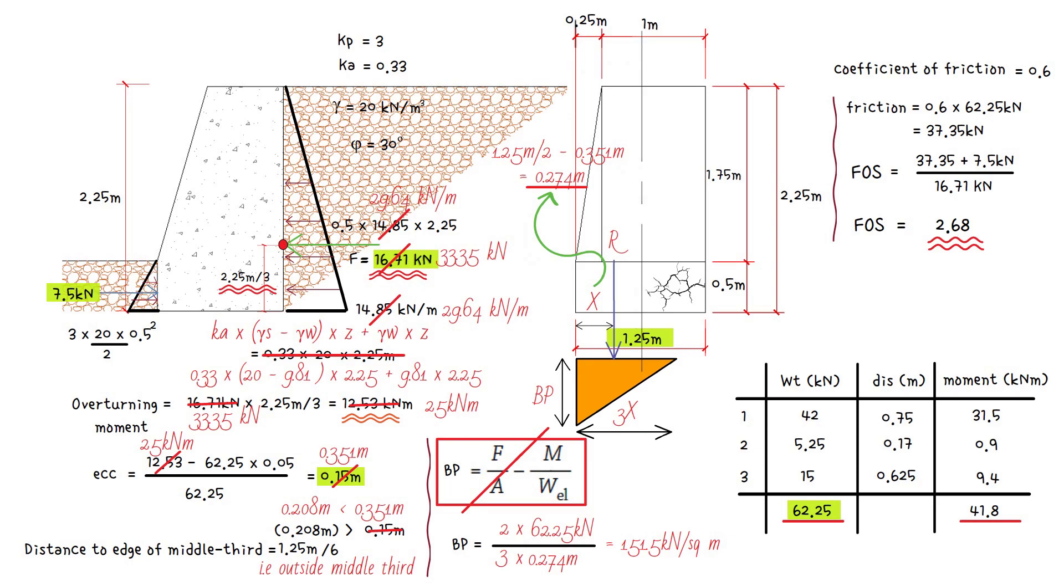As the position of the resultant nears the edge of the base, the value of maximum bearing pressure increases significantly until it exceeds the compressive strength of either the structure or the foundation material. As the material crushes, it forms a pivot, and when the resultant vertical force moves beyond the pivot point, it results in collapse.